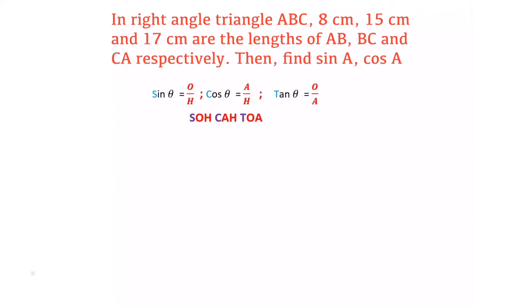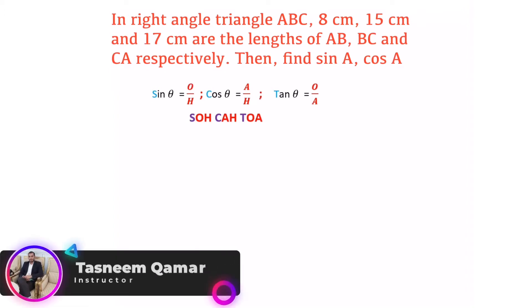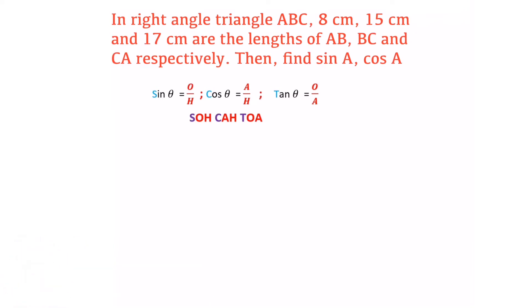In right angle triangle ABC, 8 centimeters, 15 centimeters and 17 centimeters are the lengths of AB, BC and CA respectively. Then find sine A, cos A. So let us draw a right angle triangle.